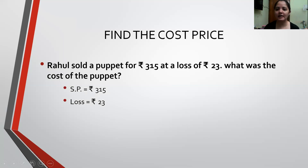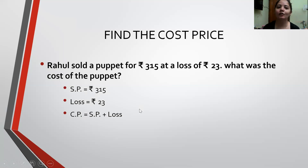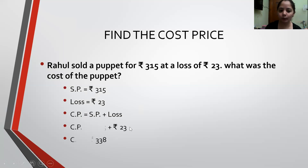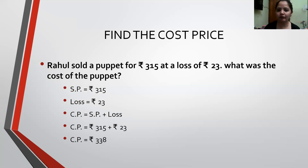When Cost Price is more, then only we have losses. So, how will I find my Cost Price? My Cost Price will be Selling Price plus Loss — I will add. When I add both numbers: Rs. 315 plus Rs. 23, I get the total Cost Price as Rs. 338.